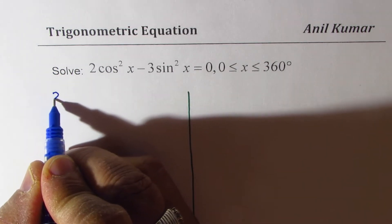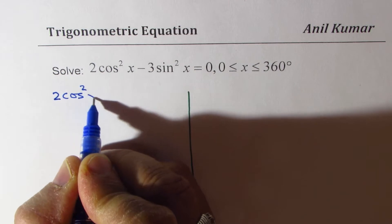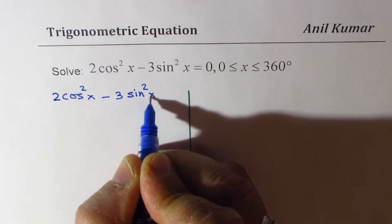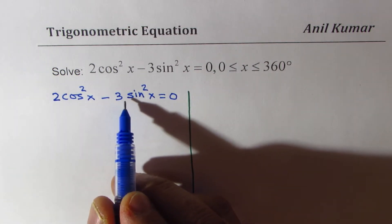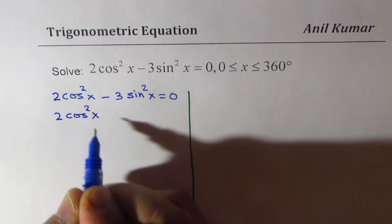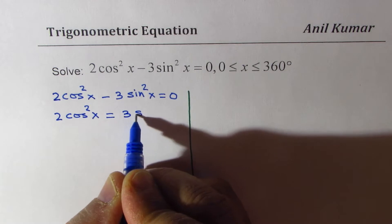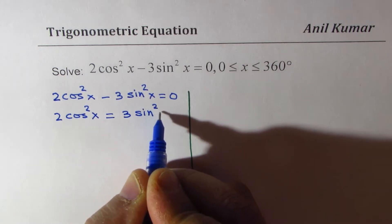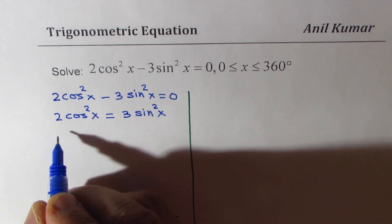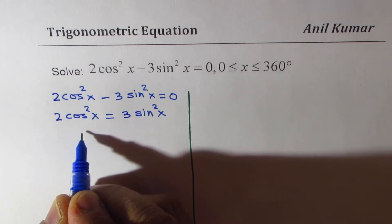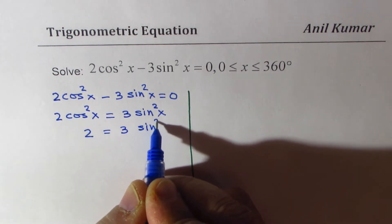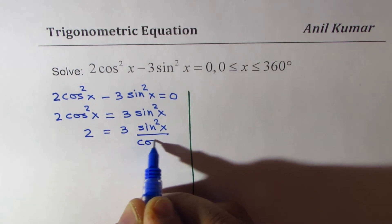So one method could be that you begin with 2cos²x - 3sin²x = 0. Take sin²x term to the other side, so we get 2cos²x = 3sin²x. Now if I divide by cos²x on both sides...